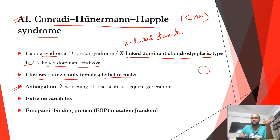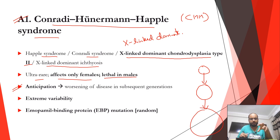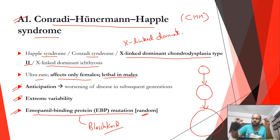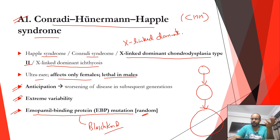CHH has extreme variability, so not all features may be present to the same extent in all generations. The problem lies in the EBP gene mutation, which can also occur randomly. When this mutation occurs randomly, features of CHH can present in a Blaschko distribution — lesions or symptoms presenting in one limb, two limbs, or half the body — though mostly it is a generalized disorder involving the whole body.